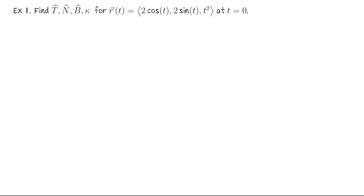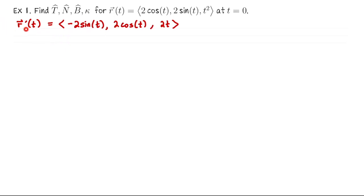Whenever we start a problem like this, the first step is typically to compute the velocity vector. When you have R of t, go ahead and compute R prime of t. So the velocity vector for any input t is (-2 sine of t, 2 cosine of t, 2t). That's just term-by-term differentiation.